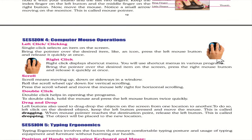Left click or single click selects an item on the screen — bring the pointer over the desired item and press and release the left button quickly. Right click displays a shortcut menu — bring the pointer over the desired item, then press and release the right mouse button quickly.